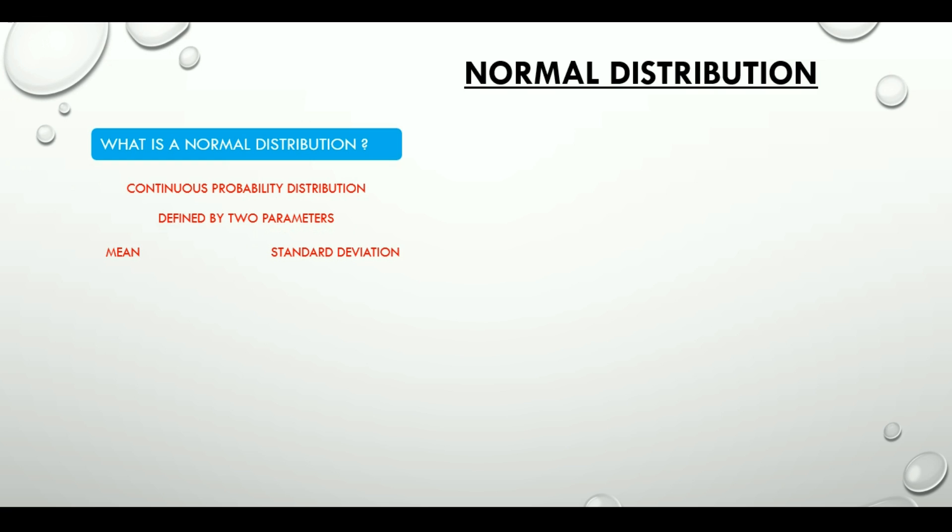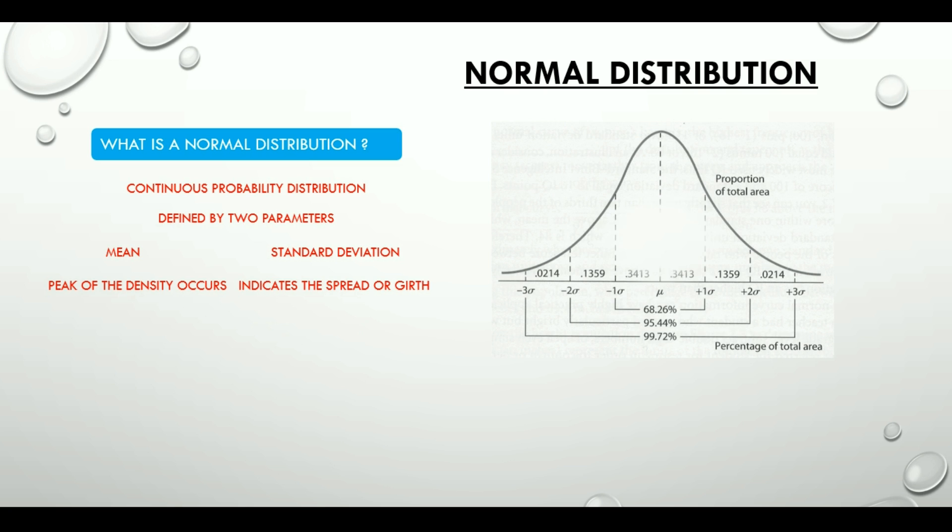Well, normal distribution is one of the most popular and most extensively used distributions in statistics. As I said, it is described by the mean and the standard deviation. Mean is where the peak of the density occurs in a normal curve. And standard deviation indicates the spread or the girth of the curve. Here is how a normal distribution curve or a bell curve or a Gaussian curve looks like.